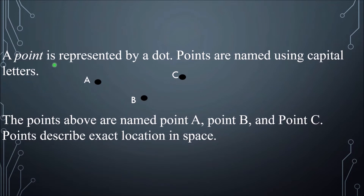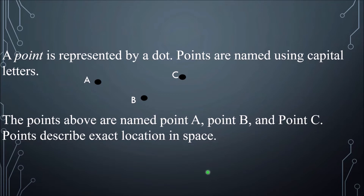A point is represented by a dot. Points are named using capital letters — this is point A, this is point B, this is point C. Points describe exact location in space. Space is the set of all points, whether from a 3D figure or a 2D figure. The set of all those points is called space.